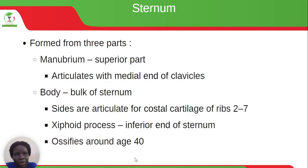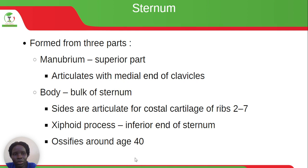The sternum is formed from three parts. We have the manubrium, which is the superior part and articulates with the medial end of the clavicles. Then we have the body, which is the bulk of the sternum, and its sides articulate with the costal cartilage of ribs 2 to 7. Then we have the xiphoid process, which is the inferior end of the sternum, and this ossifies around age 40.